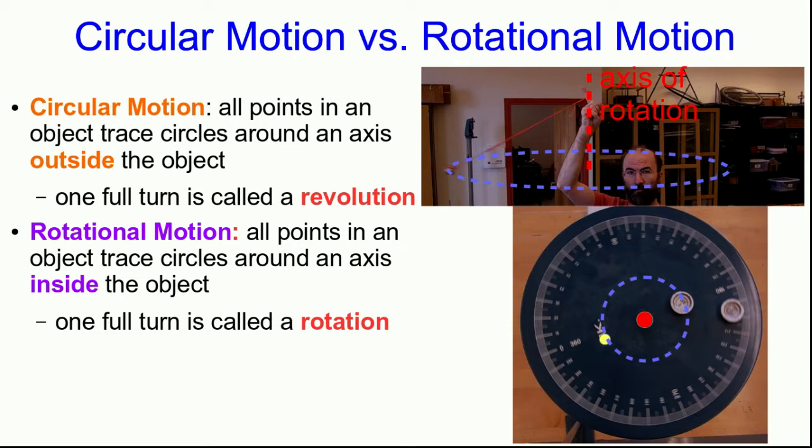Now I will point out that this rotating object has two other objects sitting on it, these two masses, and they're also going in circles. And so since the axis of rotation isn't inside them, they are executing circular motion.